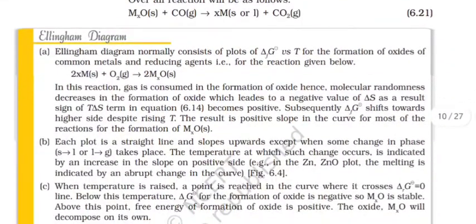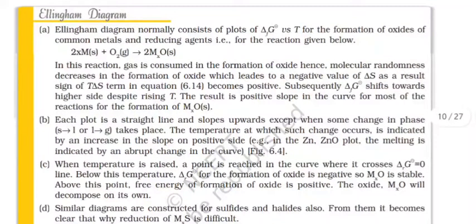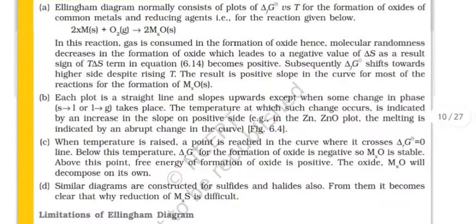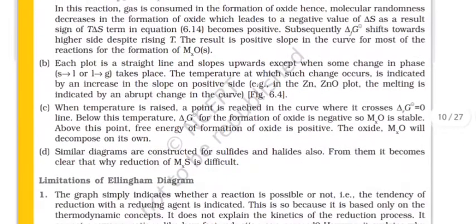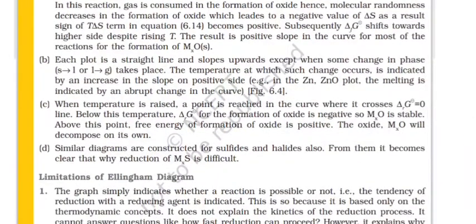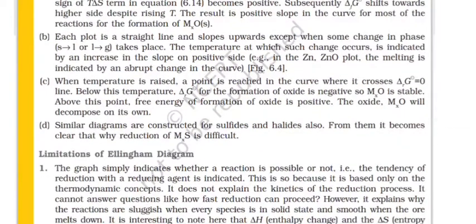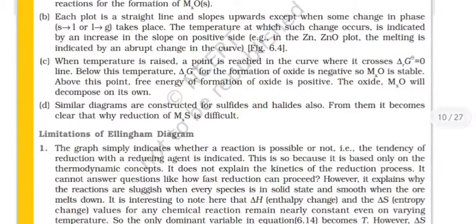Ellingham diagram normally consists of plots of ΔG versus T for the formation of oxides of common metals and reducing agents. In this reaction gas is consumed in the formation of oxide. Hence molecular randomness decreases in the formation of oxide which leads to a negative value of ΔS. As a result, the sign of TΔS term in equation becomes positive. Subsequently shift towards higher side despite rising T. The result is positive slope in the curve for most of the reactions for the formation of MxO.